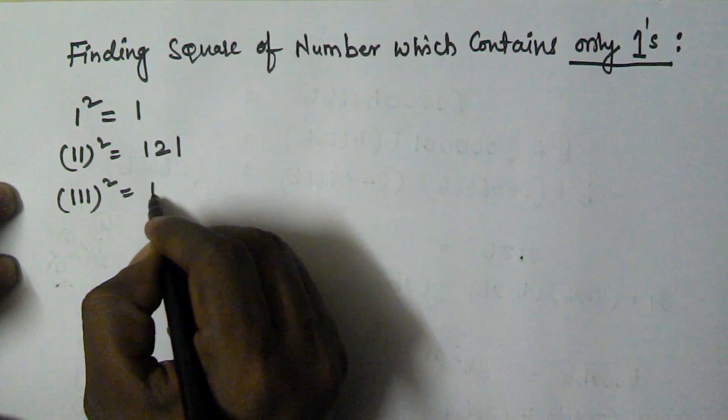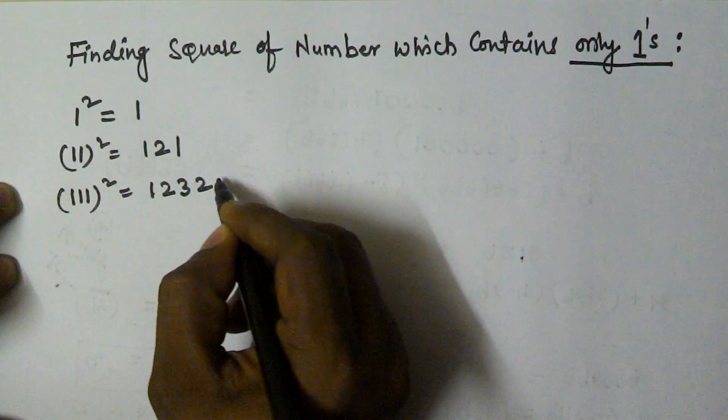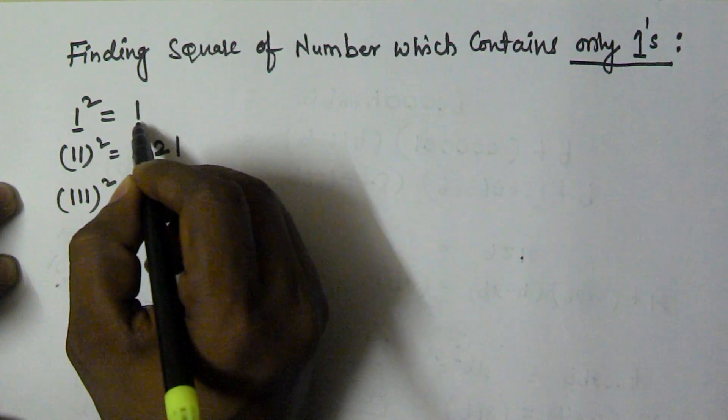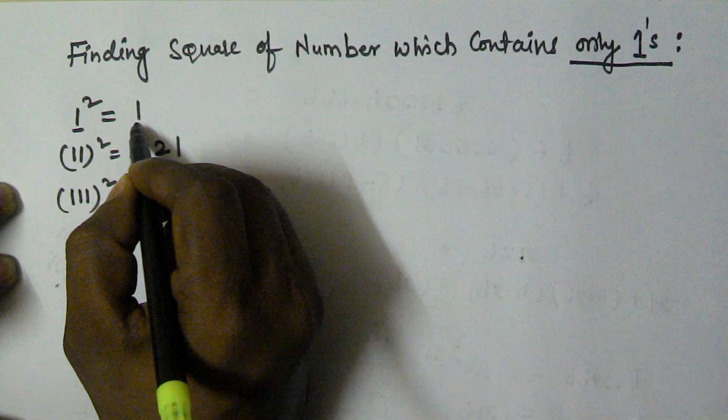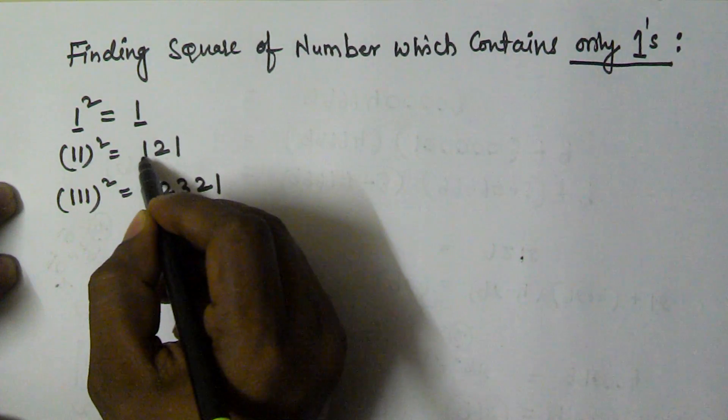111² is going to be 1, 2, 3, and then 2, 1. 1² is 1, it contains only one digit so it is only 1. 11² contains 2 digits, so you start from 1 and...